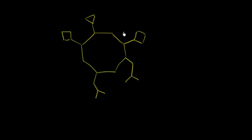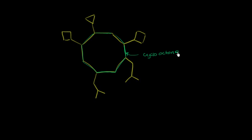Let's see if we can name this molecule. We always want to look for the longest carbon chain or the longest carbon cycle. It's pretty obvious from this picture that we have a very long carbon cycle here. We have one, two, three, four, five, six, seven, eight carbons in a cycle. So we can call this backbone cyclooctane — it's an alkane in a cycle because it's all single bonds.